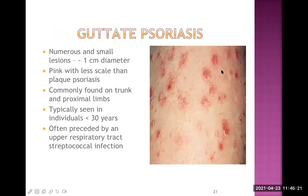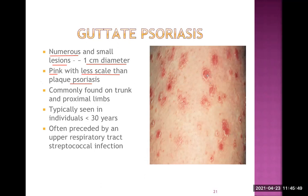The second type on the list is guttate psoriasis. In this condition there are numerous small lesions on the skin, roughly about one centimeter in diameter. They are pink with less scale than plaque psoriasis, and look pinkish to reddish. They are commonly found on the trunk and proximal part of the limbs, typically seen in individuals less than 30 years of age. One very common association is that it is often preceded by an upper respiratory tract infection caused by group A beta-hemolytic streptococci — streptococcus pyogenes — usually tonsillitis or pharyngitis.